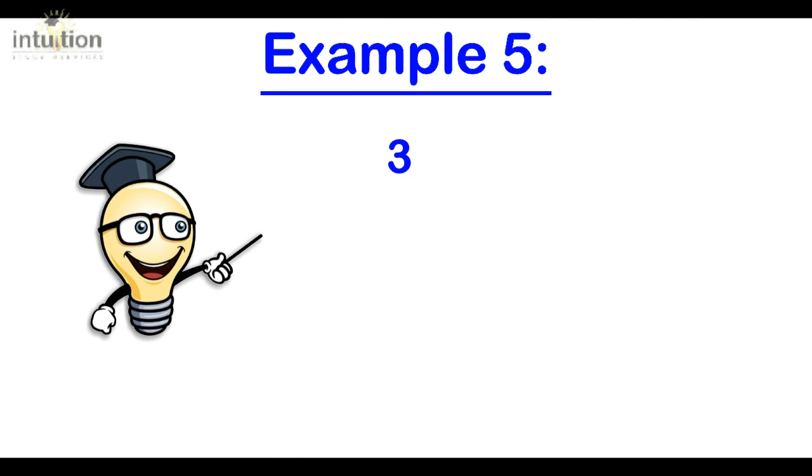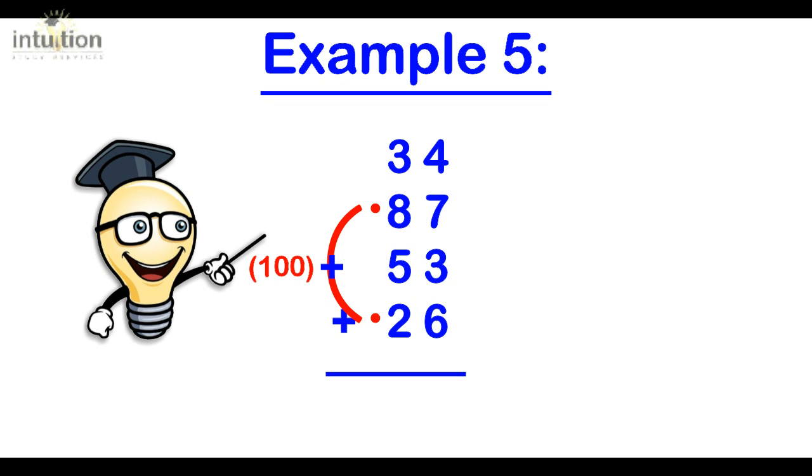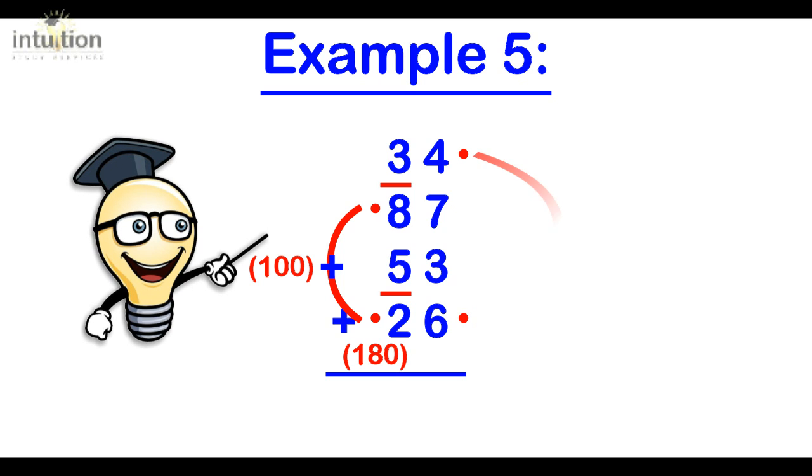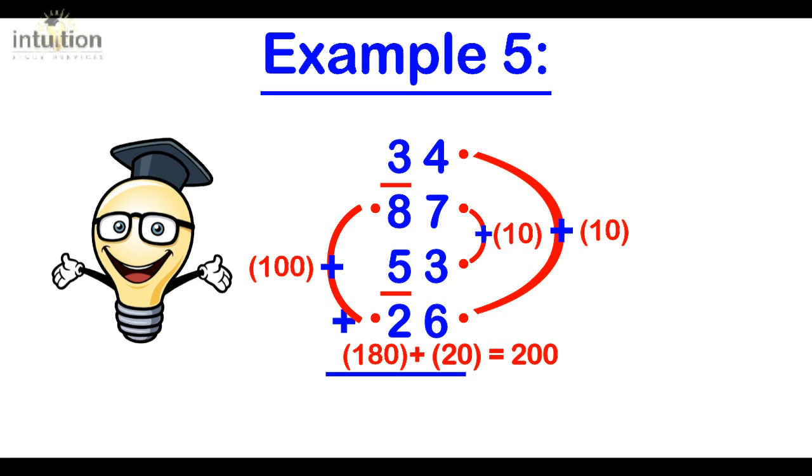Let's take a look at another example. We have 34 plus 87 plus 53 plus 26. We can notice that the 8 and the 2 make 100, then 150, then 180. Also in the units column the 4 and 6 complement to make 10, and the 7 and 3 complement to make 10, giving us 20 straight away. So we have 180 plus 20 which is 200.